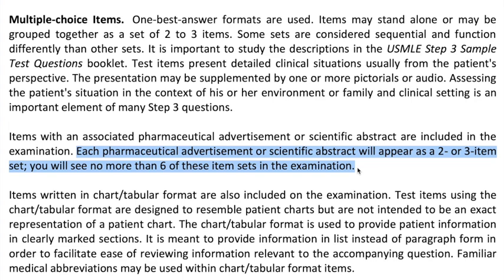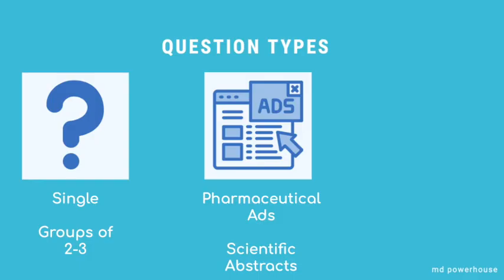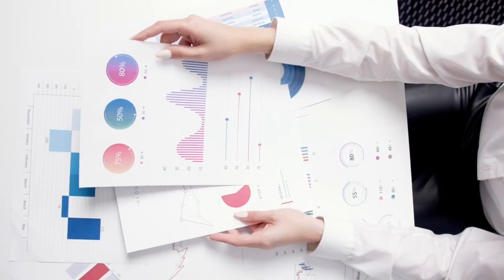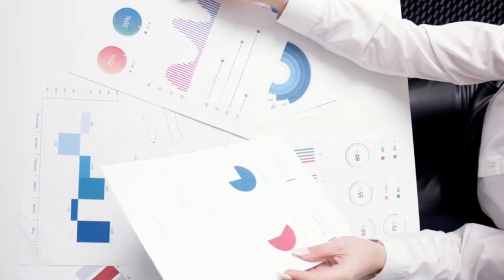Another question type is a patient chart. The question will have an entire chart listed out for you and ask questions based on the patient chart. Day 1 is also the day where you'll be tested on all those biostats that are very predominant on the Step 3 exam.